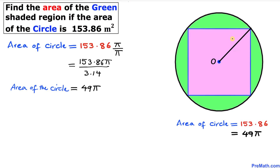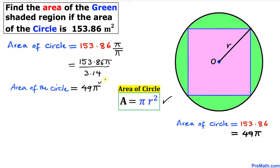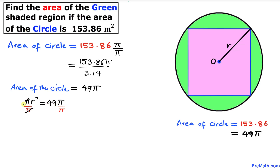Let's suppose the radius of this circle is r with center O. Recalling the area of a circle formula, area equals pi r squared, and we have area equal to 49 pi. Comparing these two equations, pi r squared equals 49 pi. Dividing both sides by pi, the pi cancels and we get r squared equals 49.